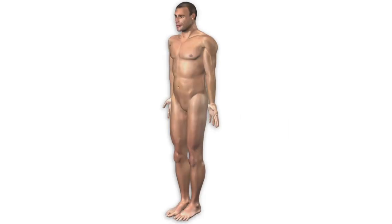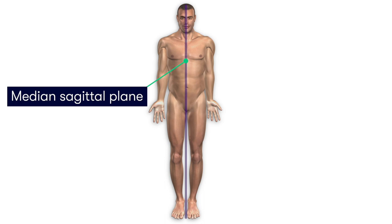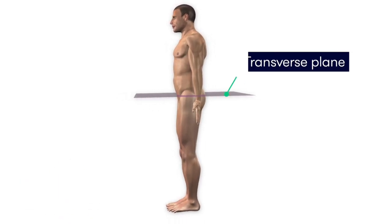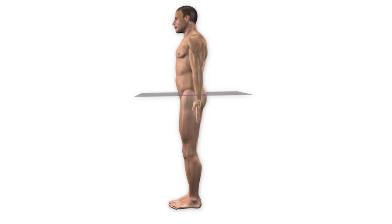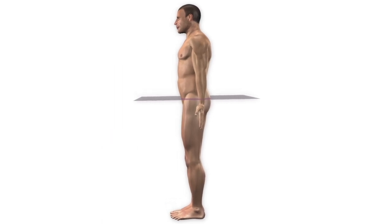In the case of a sagittal line that exactly divides the body into equal left and right parts, we refer to this as the median sagittal plane. Lastly, we have the horizontal plane, also referred to as the axial or transverse plane. You can imagine it by picturing a magician sawing their assistant in half — that saw line divides the body into a superior part and an inferior part, terminology we'll return to later.